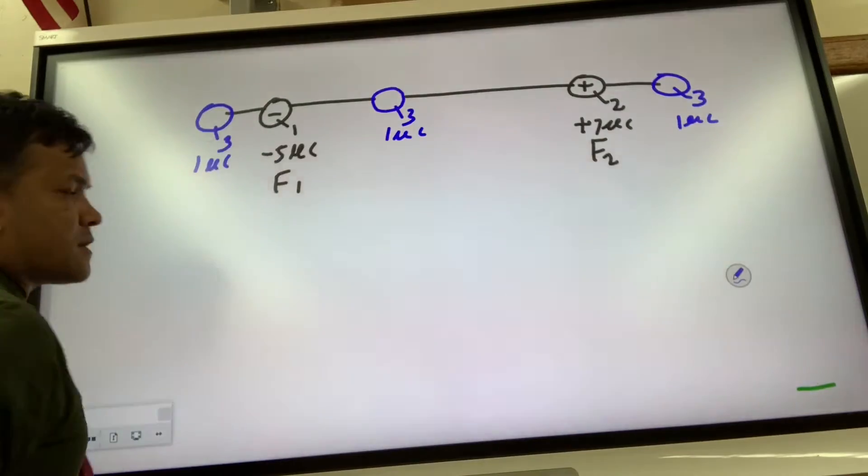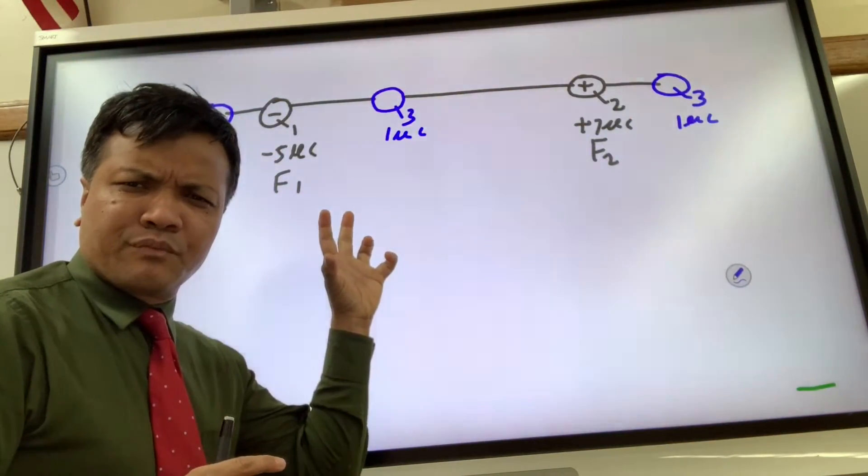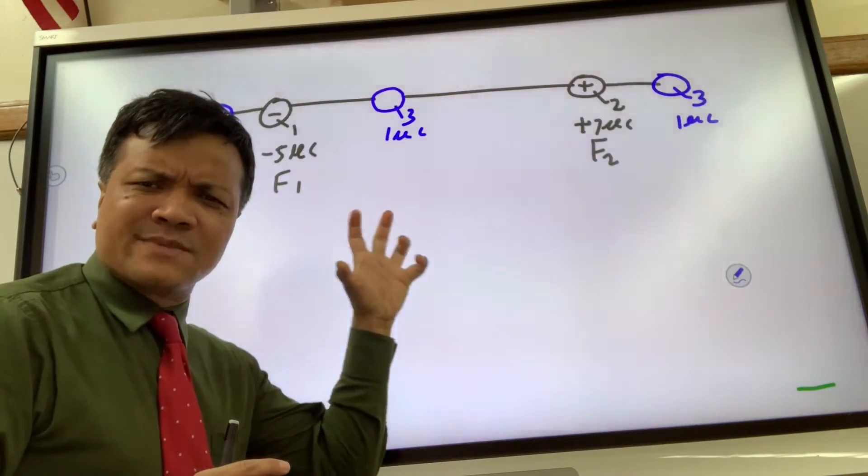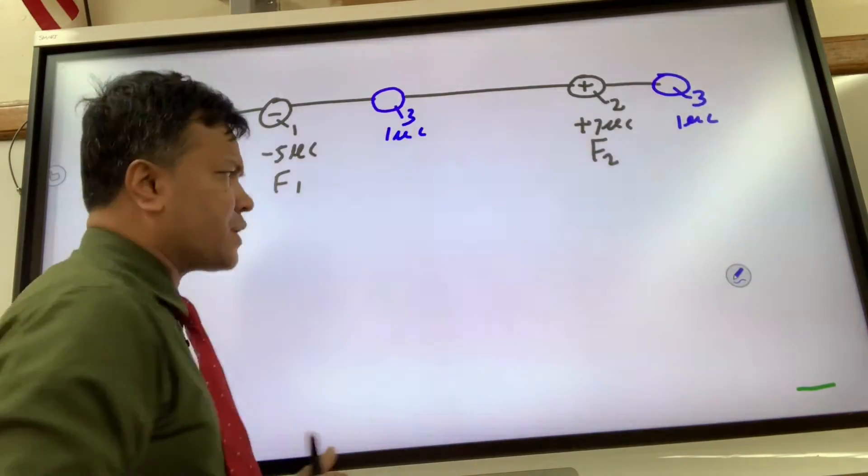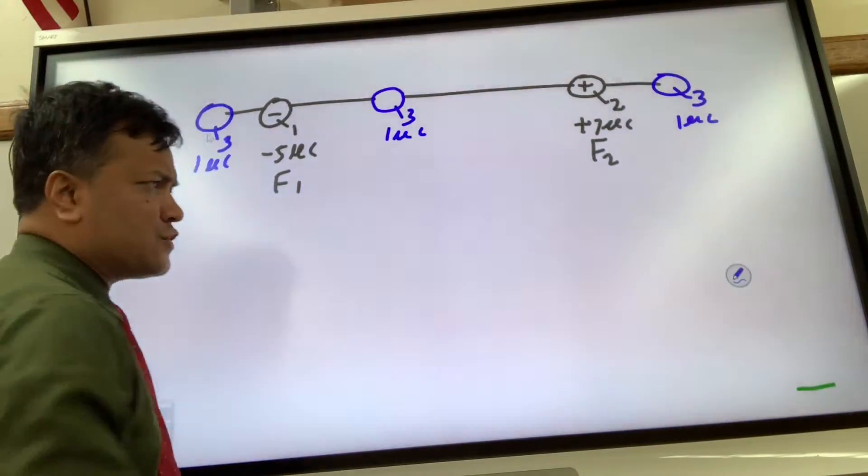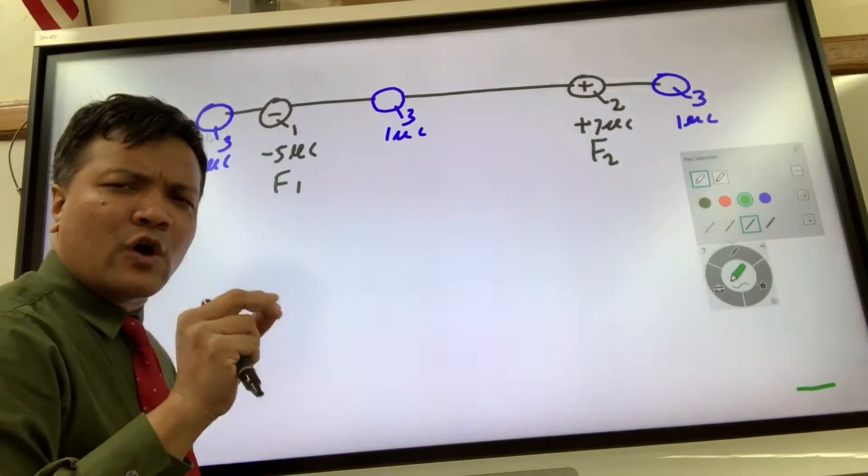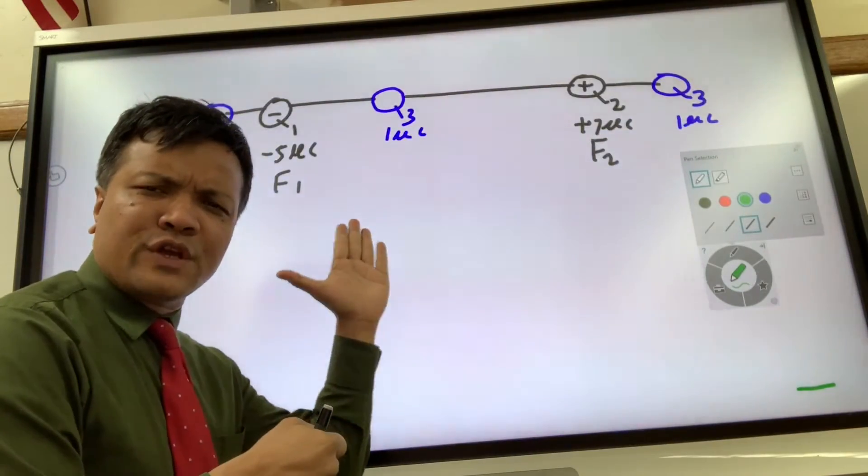Now let's see where q3 will experience equilibrium. To investigate that, we have to draw the vectors. So let's draw the vectors. First, we're gonna draw force on q3 due to q1.